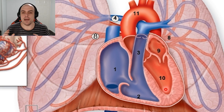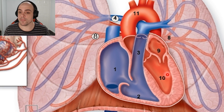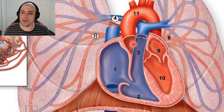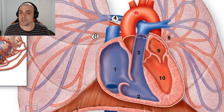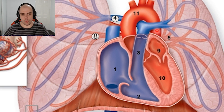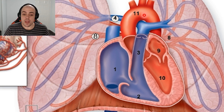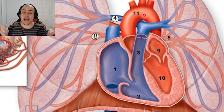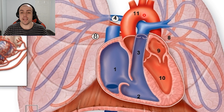The left ventricle then constricts and pushes blood through the aortic semilunar valve, up the aorta, across the aortic arch, and down to the rest of the body. That is our pulmonary and systemic circulation.